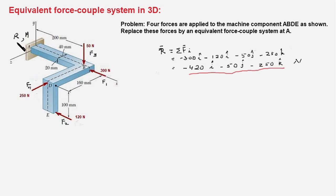So, the force R is sum of the individual forces. Let's label these forces as F1, F2, F3 and F4. F1 is minus 300i. F2 is minus 120i. F3 is minus 50j. And F4 is minus 250k. So, we sum them and we end up with R is minus 420i minus 50j minus 250k newtons. So, that's the first part.